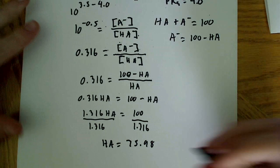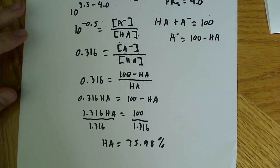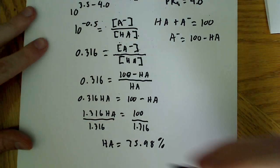And that's our percentage right there. So, the percentage of protonated barbituric is going to be 75.98%.